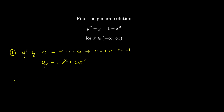Now we need to find a particular solution. The idea behind undetermined coefficients is: since we have a constant-coefficient differential equation, the forcing function must be a general linear combination of yp and its derivatives. So we make an educated guess — a general linear combination of the forcing function and its derivatives.